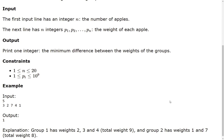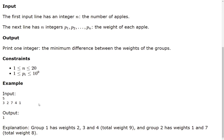n is in the range between 1 and 20 inclusive, and pi, the weight of an apple, can be between 1 and 1 billion. Here we have the explanation of the sample input, which you can read by yourselves.